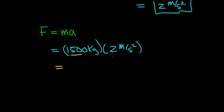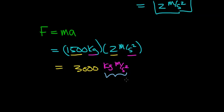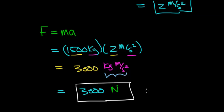When you multiply 1,500 kg times 2, you get 3,000. The units work out to be kg·m per second squared, which is defined as a newton. One newton is the force required to accelerate an object at a rate of 1 m per second squared. So we can rewrite this as 3,000 newtons — this is the force required to speed up this car at a rate of 2 m per second squared.